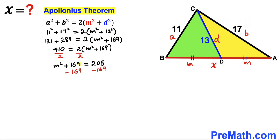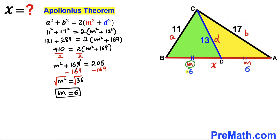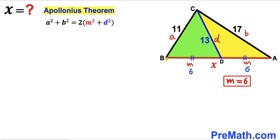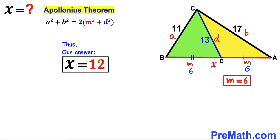Subtracting 169 from both sides, m² = 36. Taking the square root of both sides, m = 6 units. Both segments BD and AD are 6 units each, so the whole side X = 6 + 6 = 12. Thus our X value is 12 units, and that's our final answer.